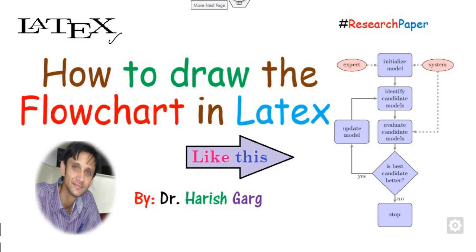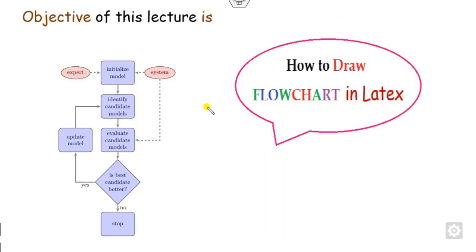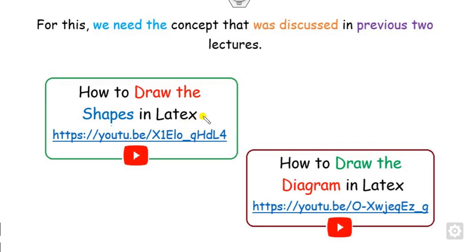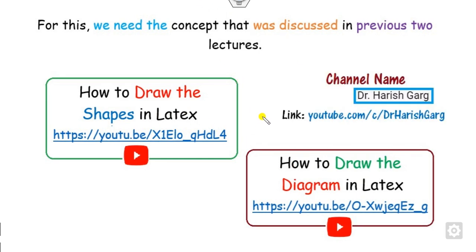The objective of this lecture is not only to draw such type of flowchart, but we will also discuss how we can draw this flowchart in the same way. To understand how we can make this flowchart, we need the previous two lectures — how we can draw shapes and how we can draw diagrams in LaTeX. You can firstly watch these two previous videos; the link is given in the description. All are available on this channel, Dr. Harishkar, and the link is here.